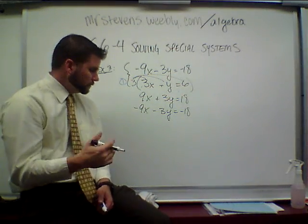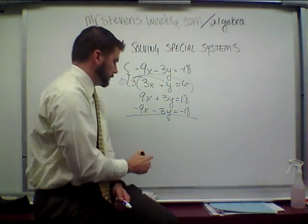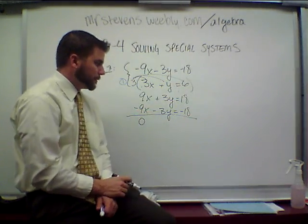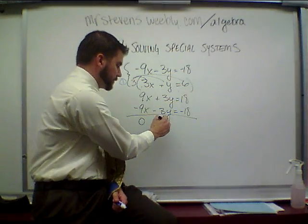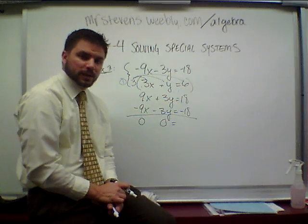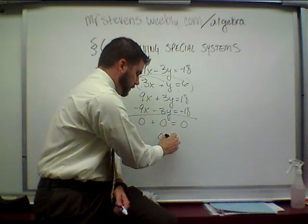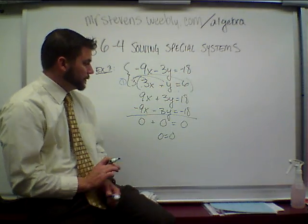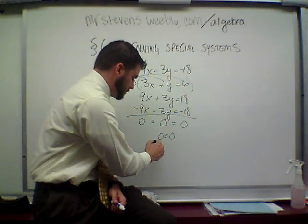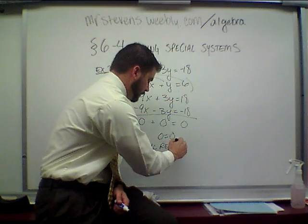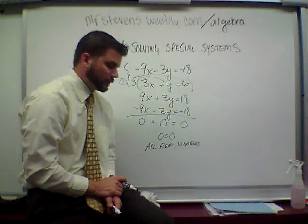Step 2 is to eliminate one of the variables. I'll add straight down: the 9x and negative 9x zero out, the 3y and negative 3y zero out, and 18 and negative 18 zero out — giving us a whole lot of zero. Knowing that 0 equals 0, this gives us a solution of all real numbers.